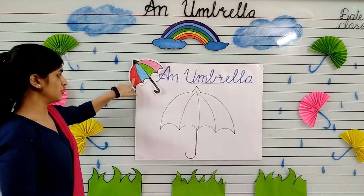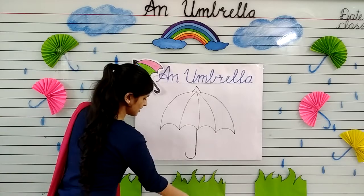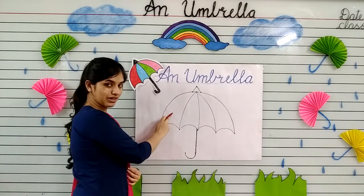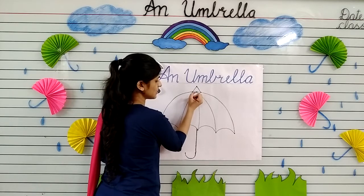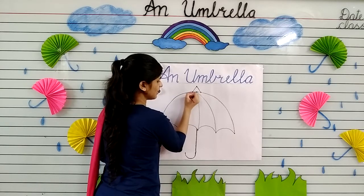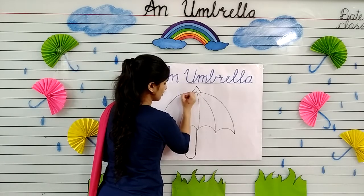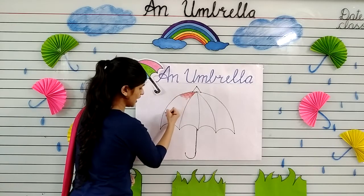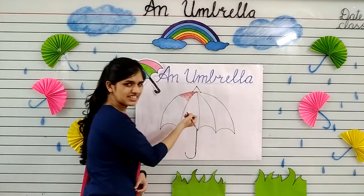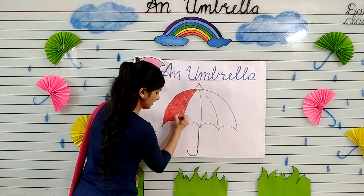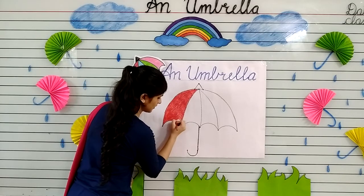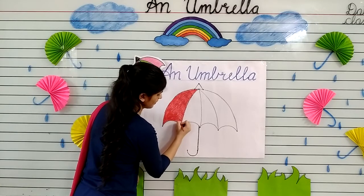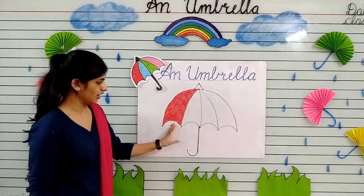So kids, tell me — which color is this umbrella? Yes, it is red color. Now take your red crayon and start coloring in this part of the umbrella. Start at the top and do it in one direction. Don't go out of the black line, otherwise it will look untidy. Don't leave space between. So our red color part is done.